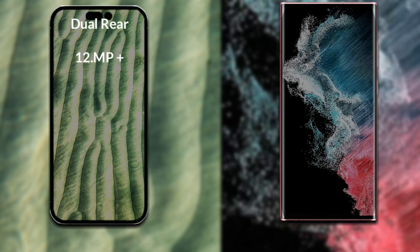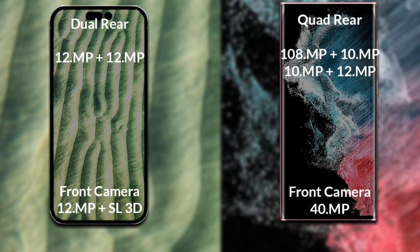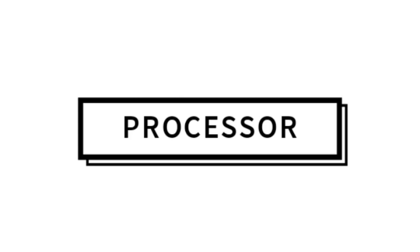Now let's compare the cameras. The iPhone 14 has a rear dual camera setup: the primary camera is 12 megapixels, the secondary sensor is 12 megapixels, and the front camera is 12 megapixels plus an SL 3D scanner. The Samsung Galaxy S22 Ultra has a rear quad camera: the primary camera is 108 megapixels, the secondary sensor is 10 megapixels, a third sensor of 10 megapixels, a fourth sensor of 12 megapixels, and the front camera is 40 megapixels.